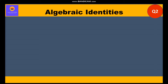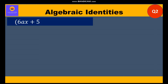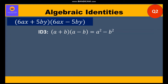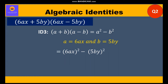Now let's move to question number 2: (6ax + 5by) into (6ax − 5by). This is clearly Identity 3, which is (a + b)(a − b) = a² − b². Here a = 6ax and b = 5by. Substituting into Identity 3, we get (6ax)² − (5by)² = 36a²x² − 25b²y². This is our answer.